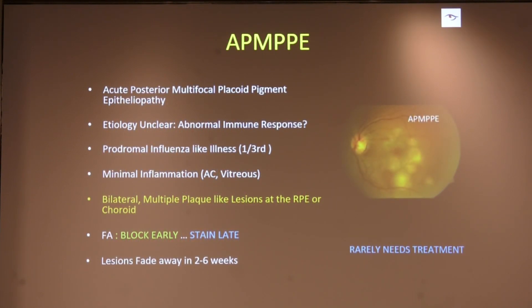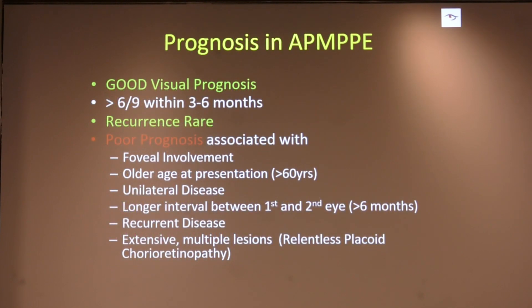Placoid lesions have a prodrome, though the reasons are unclear. They are typically bilateral, multiple plaque-like lesions at the RPE or choroid, showing early block and late staining on fluorescein angiography. They usually fade in two to six weeks and rarely need treatment. Poor prognosis is associated with foveal involvement, older age, unilateral disease, longer interval between first and second eye, recurrent disease, and extensive multiple lesions — what we call relentless placoid retinopathy.